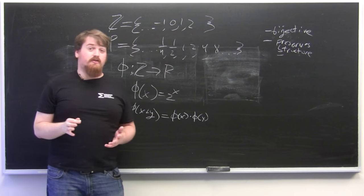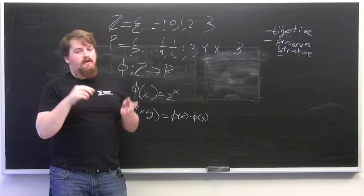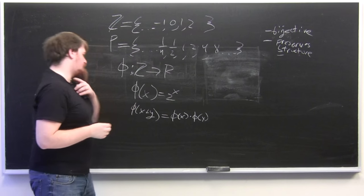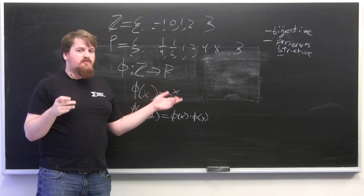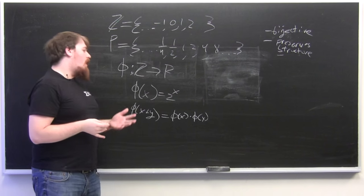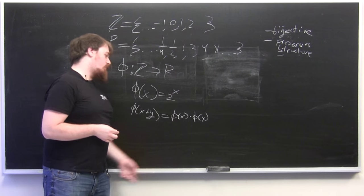And it has to preserve group structure in that the function taken on an operation of two elements. So in the case of Z where the operation is phi of x plus y, sends to the operation in the group which is the range of the images of those two elements. Since P has multiplication, it's phi of x times phi of y.